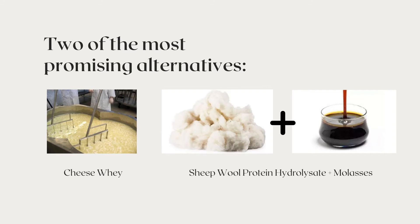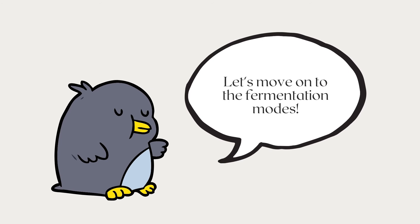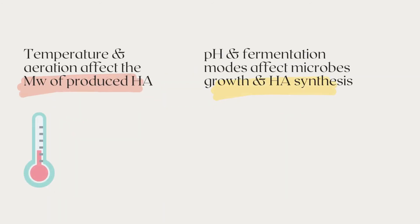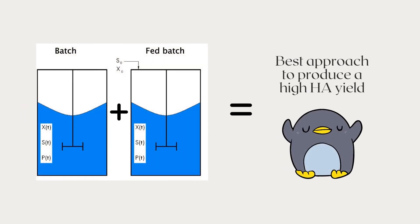However, further cost analysis between the two alternatives has to be done to know which of the two is more cost-effective. Different fermentation modes and conditions directly affect hyaluronic acid production. Some fermentation conditions, such as temperature and aeration rates, are known to directly affect the molecular weight of the hyaluronic acid produced, whereas pH and fermentation modes are known to directly affect the microbe itself. Several fermentation modes have been assessed, and it can be concluded that the best approach will be a two-stage method of combining both fed-batch and batch cultures, since fed-batch enhances cell growth while batch enhances hyaluronic acid synthesis rate.